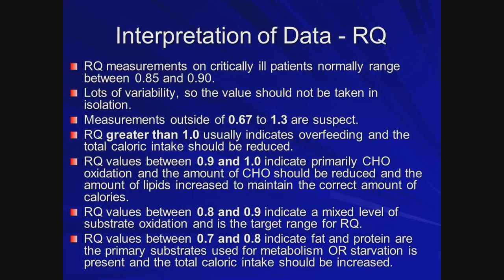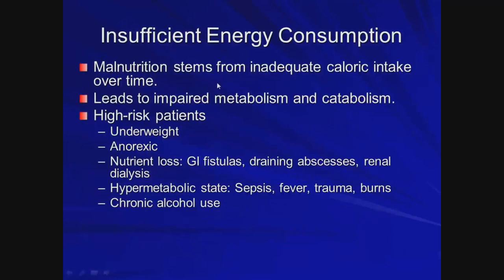Looking at the respiratory quotient clinically: under normal conditions, most critically ill patients are somewhere between 0.85 and 0.9, slightly higher than the normal RQ of 0.8. Values outside the range of 0.6 to 1.3 indicate something is wrong. Greater than 1.0 probably means you're overfeeding — detrimental in a COPD patient. A range of 0.9 to 1.0 means you're replenishing carbohydrates at the right rate. The target range is 0.8 to 0.9. In the lower range, you're seeing a lot of fat and protein metabolism rather than carbohydrate utilization.